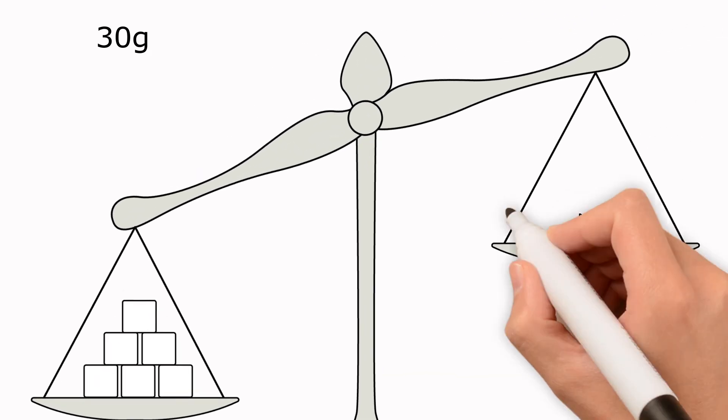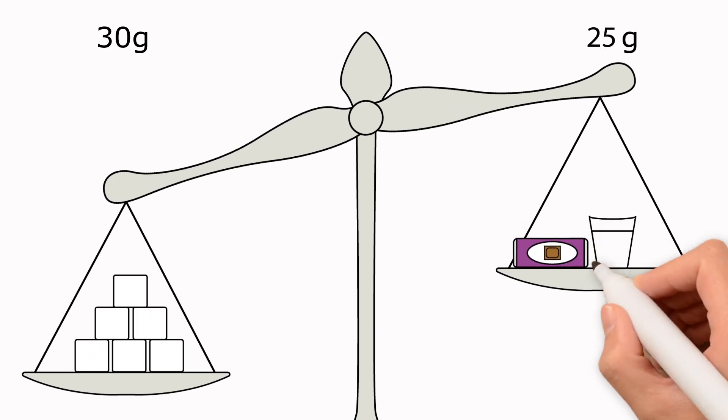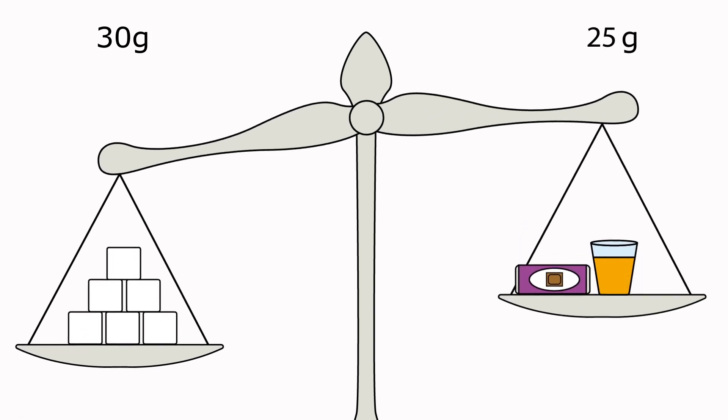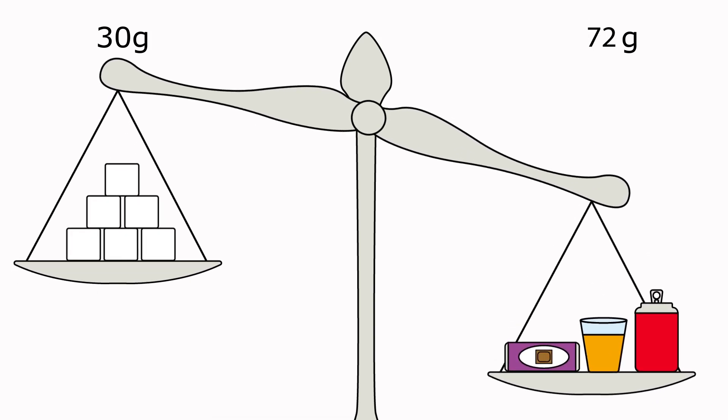A standard chocolate bar equals 25 grams of free sugar. 150 milliliters of fruit juice equals 12 grams of free sugar. A 330 milliliter can of cola equals 35 grams of free sugar.